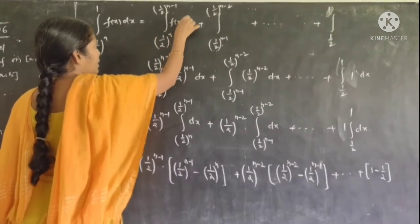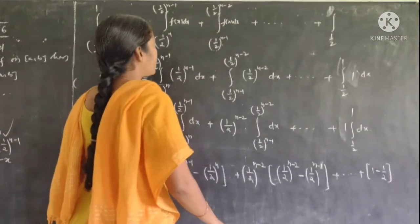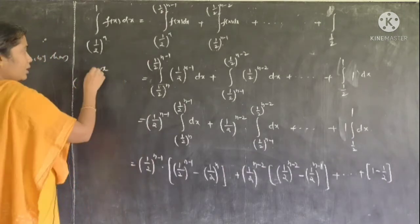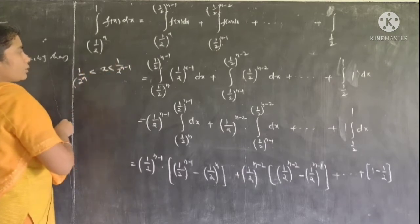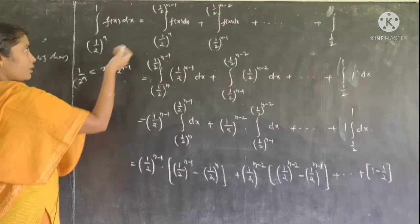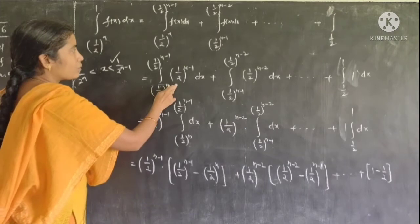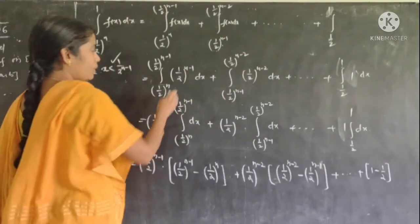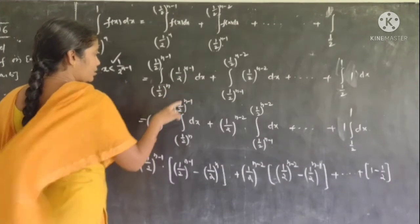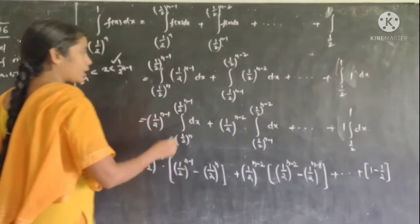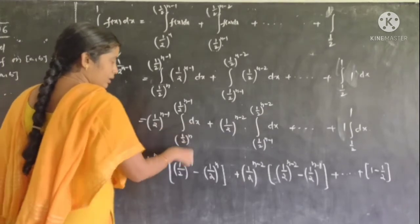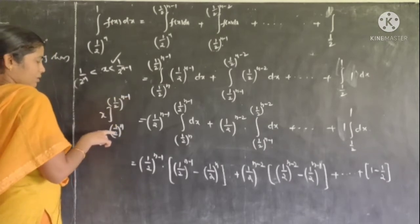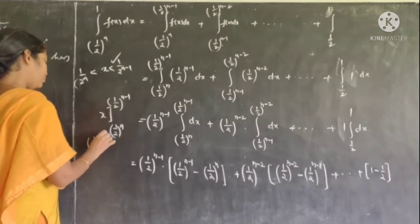In each sub-interval, f(x) is a constant. So in each integral, dx integrates to give x, evaluated between the limits. Between limits a to b, the value is b minus a. Each integral evaluates to the function value times the length of the sub-interval. The second integral also gives x between its limits.